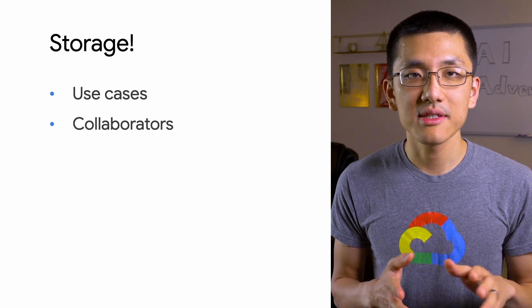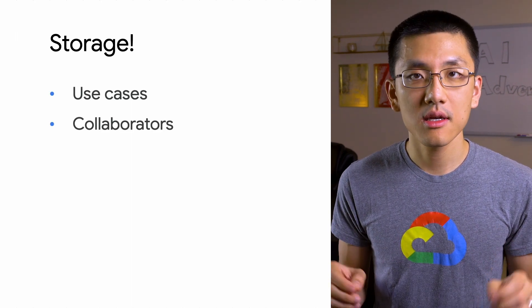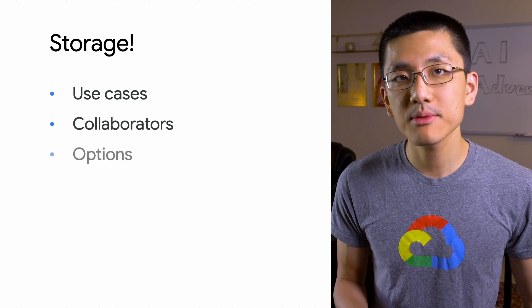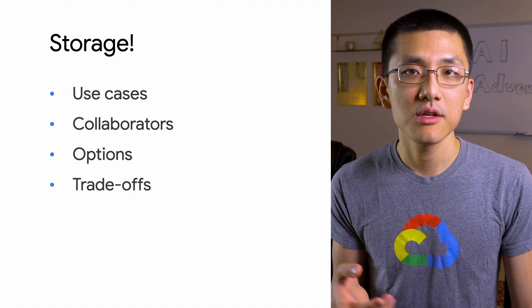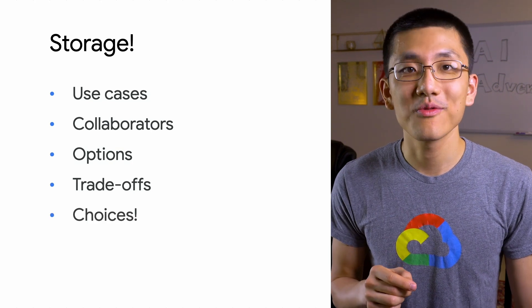When thinking about running machine learning and data science workloads in the cloud, one factor that is often overlooked is storage. It's easy to take storage for granted — in our day-to-day, storage just happens on the hard drives of our phones and laptops. But in the cloud, things are a little bit different. Depending on your use case and your collaborators, your data storage requirements may have vast differences. So today, we're going to look at some different types of storage options on Google Cloud and see what kind of trade-offs are being made, so that you can pick the right tool for your task.